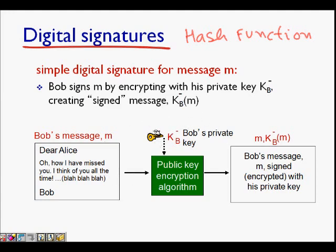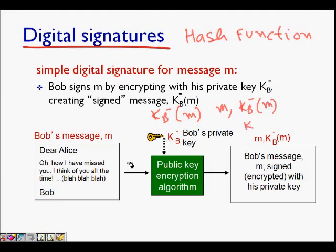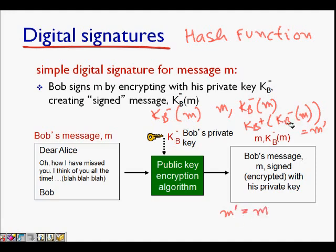For that we use the digital signature. What Bob did: he had his private key KB-minus and encrypted the message using that. He sent the message M and the encrypted version KB-minus(M). Alice could then get Bob's public key and use it to decrypt the message encrypted by Bob with his private key, and she will get message M-dash.